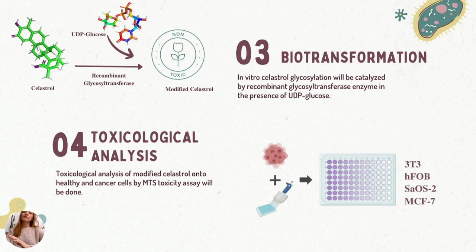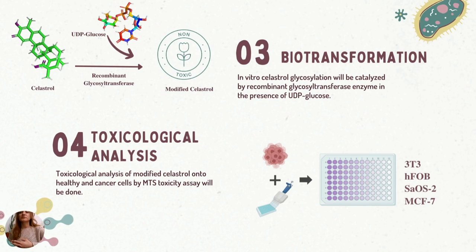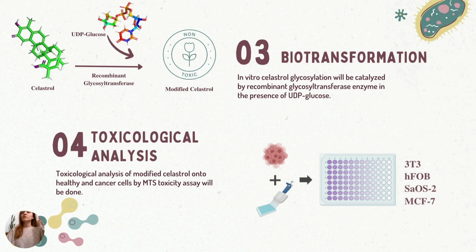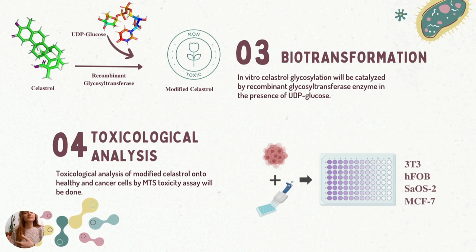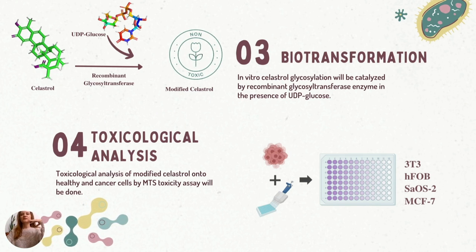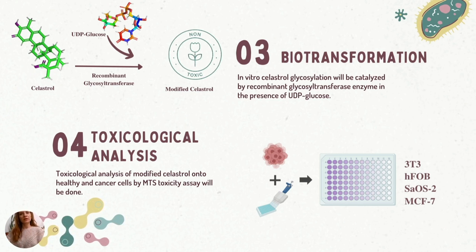In the third step, we will conduct a biotransformation of the Celastrol molecule. The native Celastrol will be modified by recombinant glycosyl transferase enzyme in the presence of UDP-glucose, which is a sugar, in vitro. Modified Celastrol obtained from biotransformation will be analyzed via UPLC and HPLC analysis to reveal the new structure of Celastrol. In the fourth and last step of our experimental design, the determination of solubility and toxicity of the glycosides of Celastrol will be completed. We will determine the solubility of modified Celastrol via UPLC analysis.